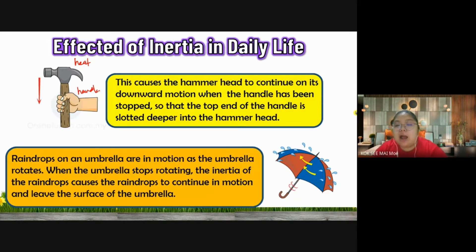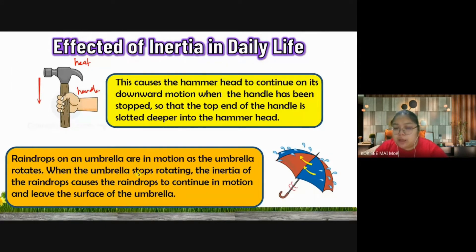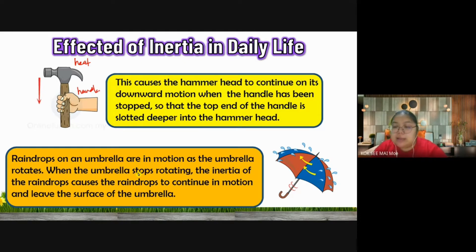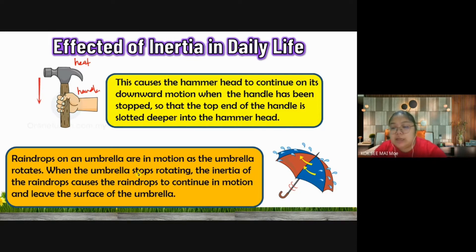Second example: raindrops on an umbrella. When you rotate the umbrella and then stop rotating, the raindrops do not stop immediately. They continue to fling outward because of the inertia of the raindrops - when the umbrella stops spinning, the raindrops cannot immediately stop. They continue the rotational motion and finally drop to the outside. This is another effect of inertia in daily life.